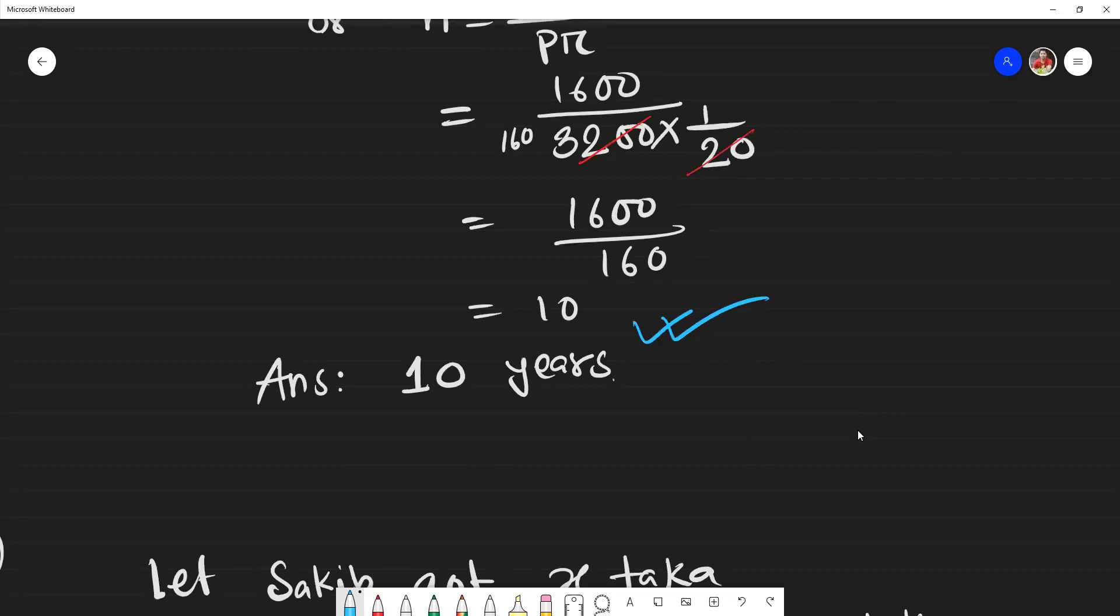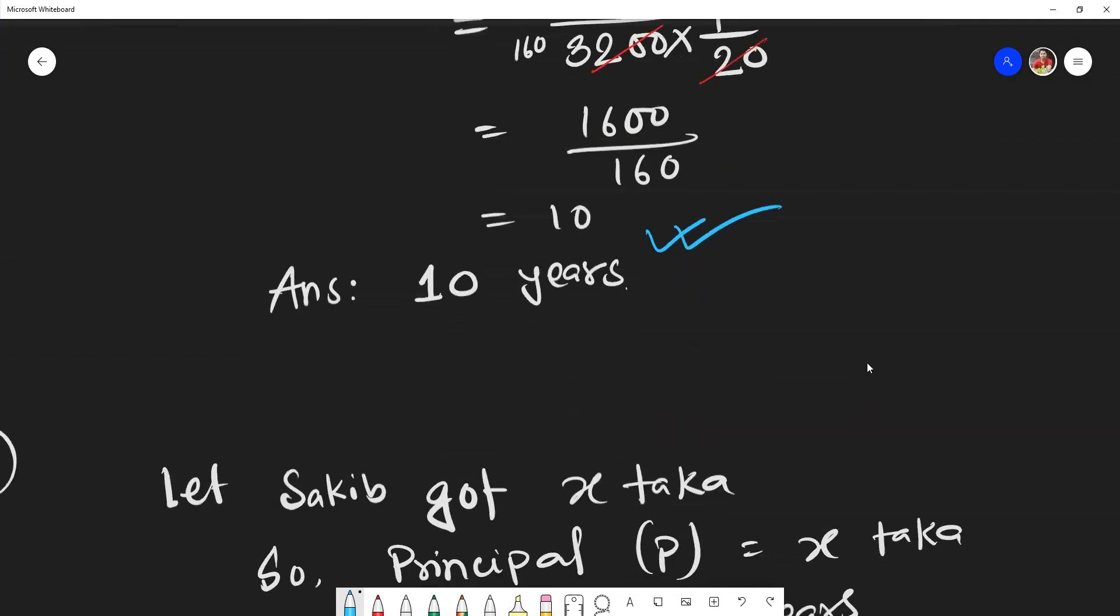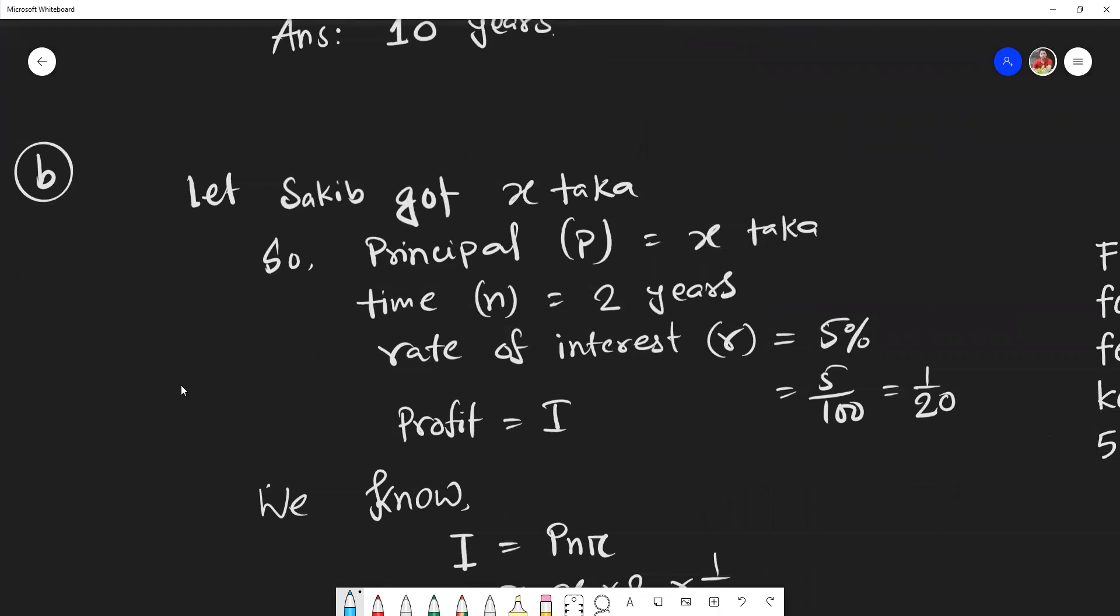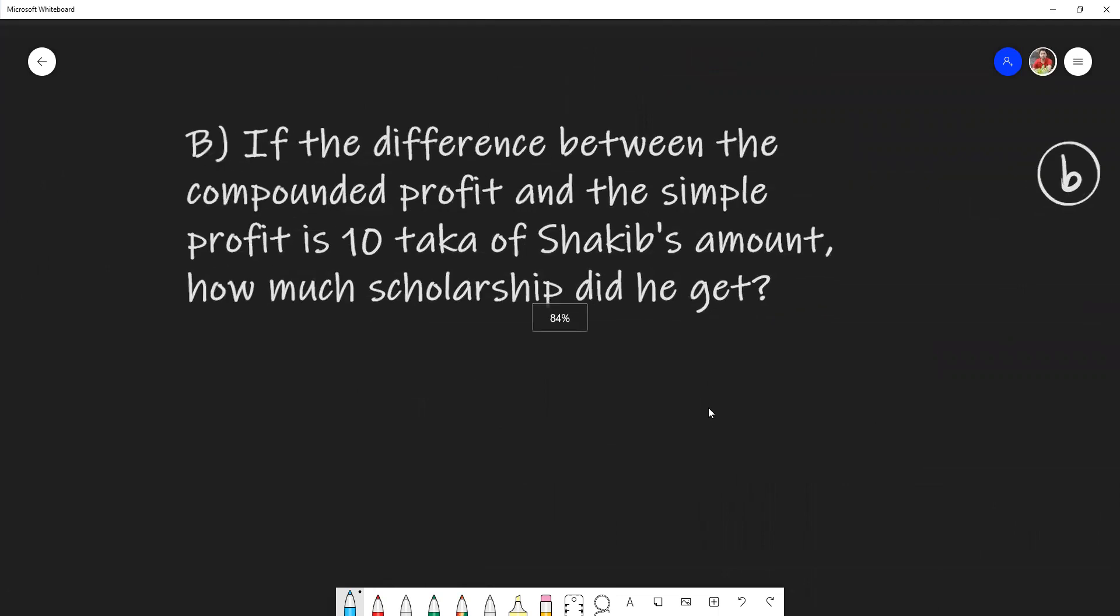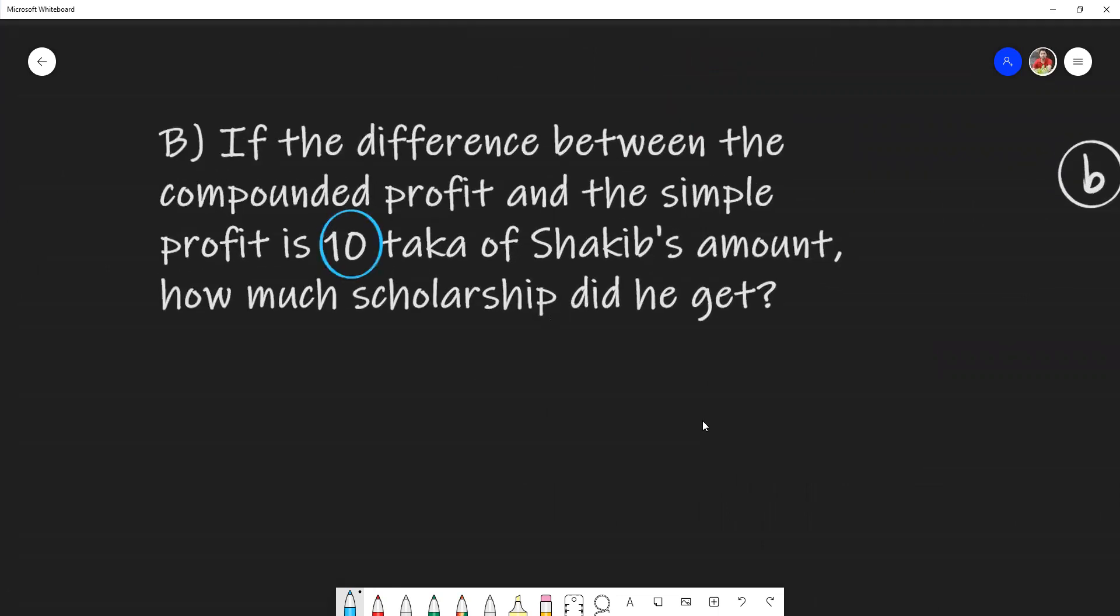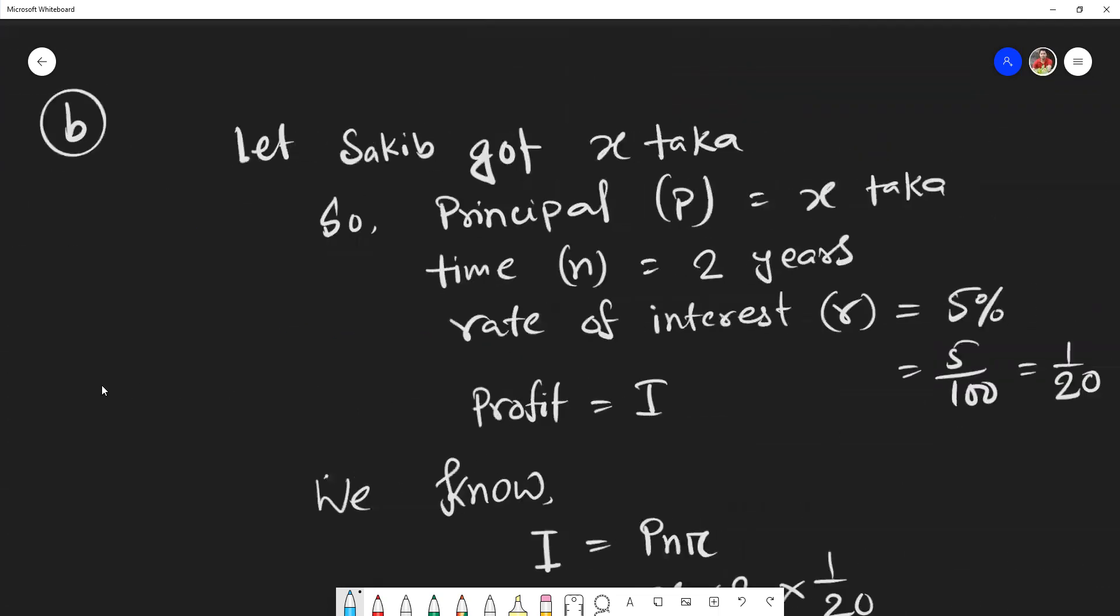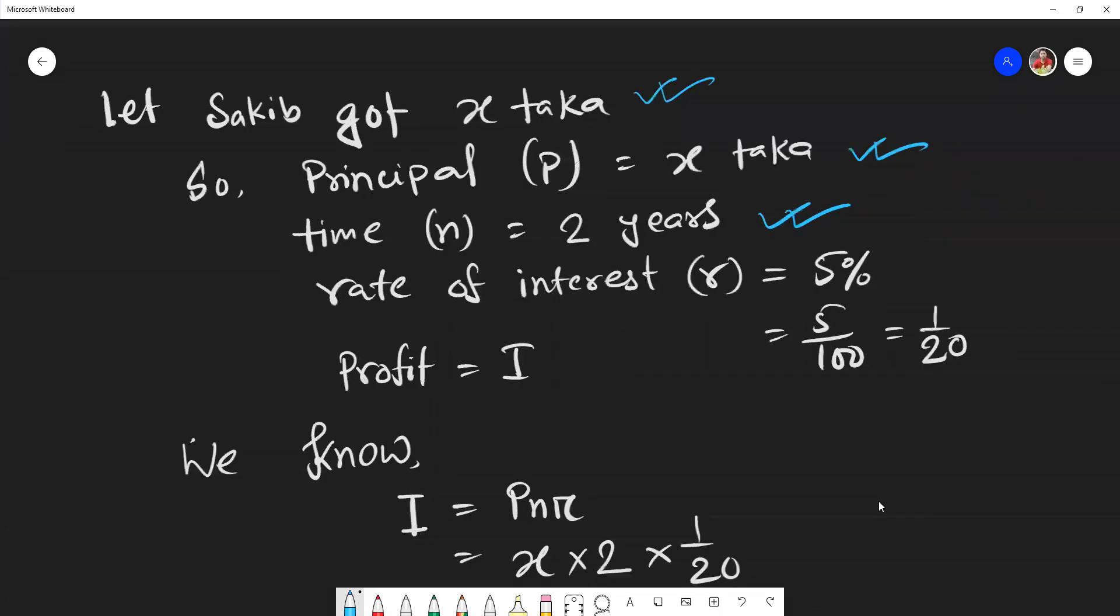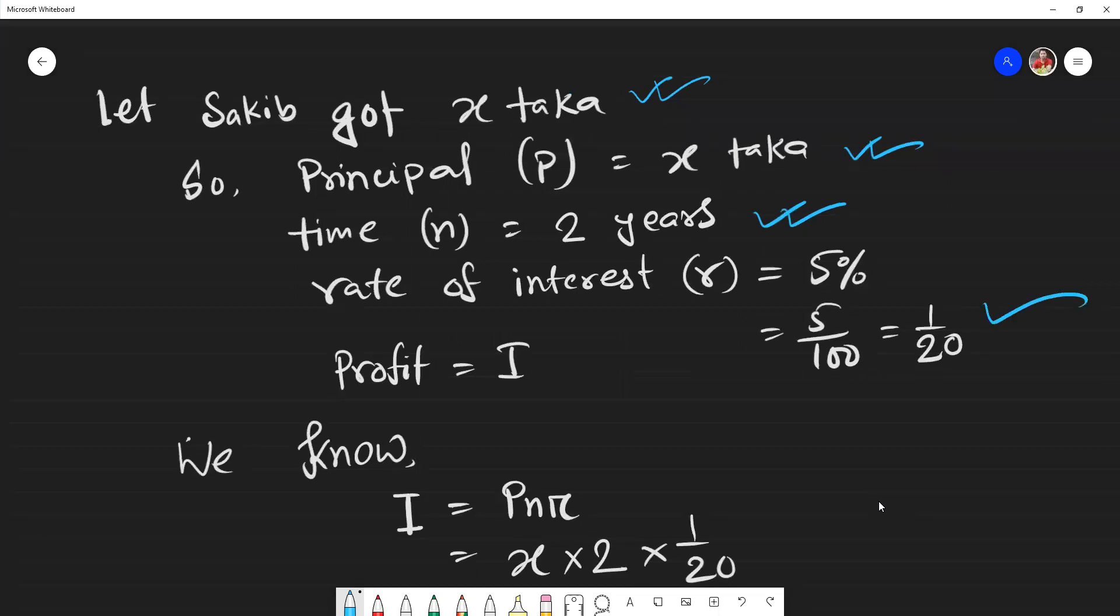Question B: Sakib's amount has a condition. If the difference between compound profit and simple profit is 10 taka for Sakib's amount, how much scholarship did he get? Let's say Sakib got x taka scholarship, so the principal is x. Both kept this amount for two years, rate is 5% which is 1/20.